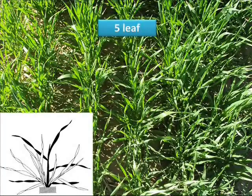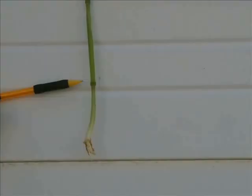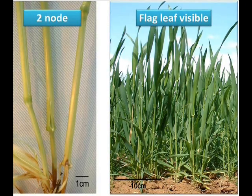After emergence and the tillering stage, you come to a stage called jointing or stooling. In the jointing stage, the growing point is above ground, and you can actually see a node or a knuckle on the stem — that's why they call it jointing.